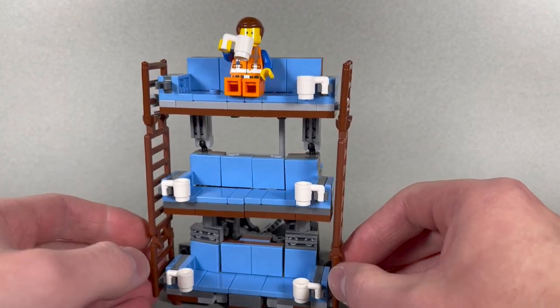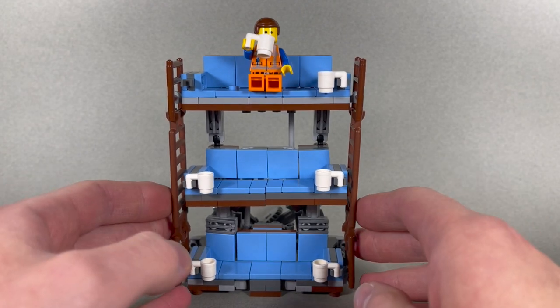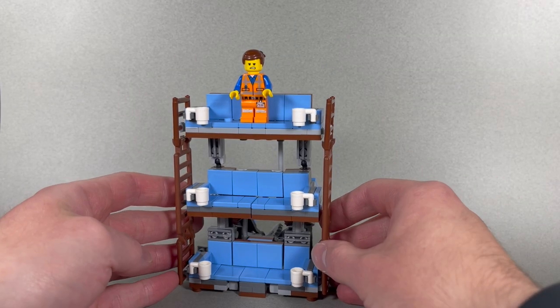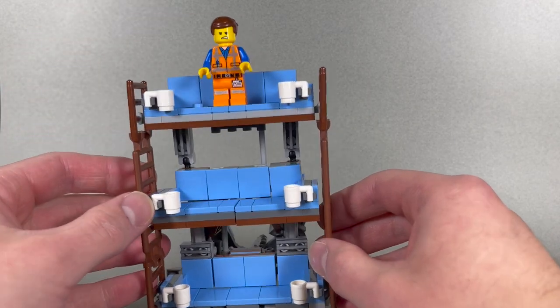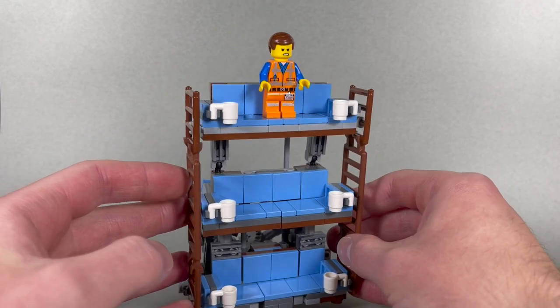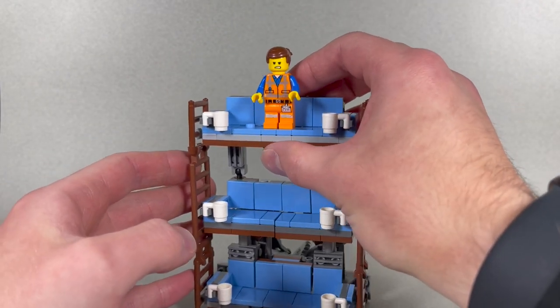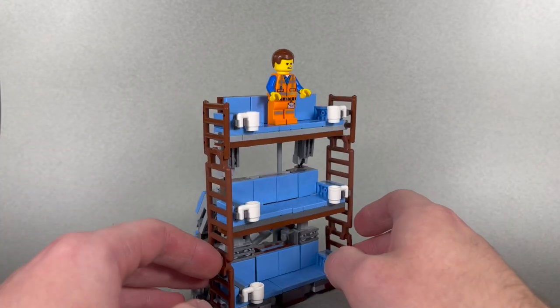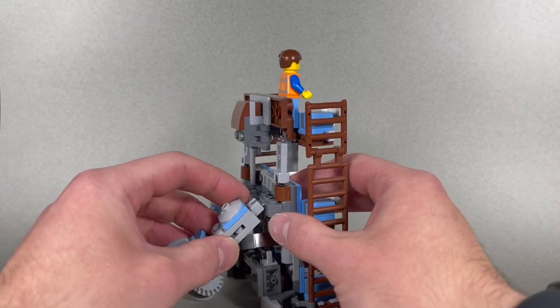And yeah, that's about it. So let's get down to transformation. So I usually like to start off the transformation by switching Emmett's face to his angry face, which I've taken the liberty of doing off camera. And then standing him up on the top couch. The nice thing is he can stay on while we're transforming it. So I think that's pretty cool.